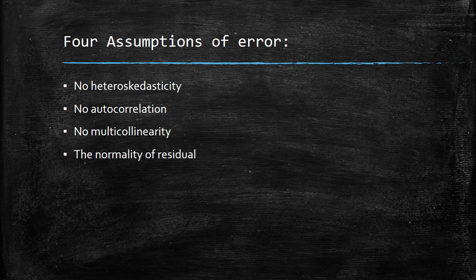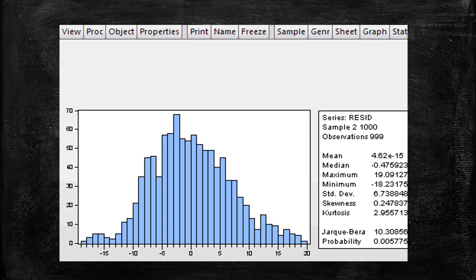We usually use the Jarque-Bera test to check the last assumption, the normality of residuals. Here is an example of this test in EViews that shows common problems.